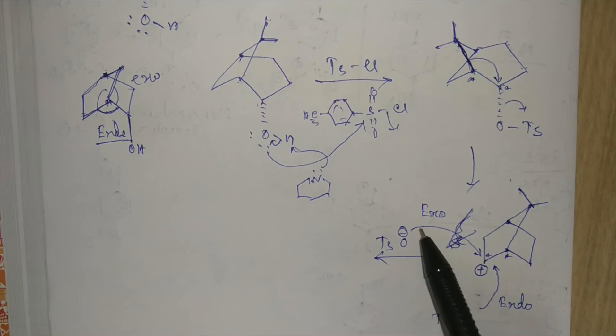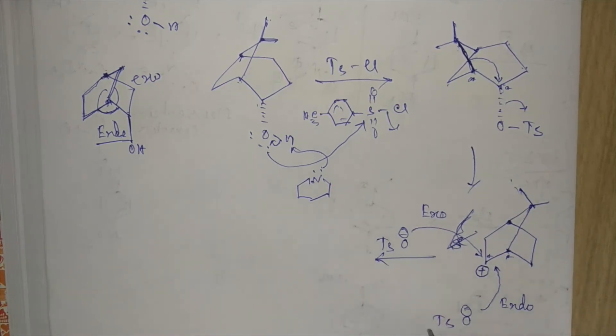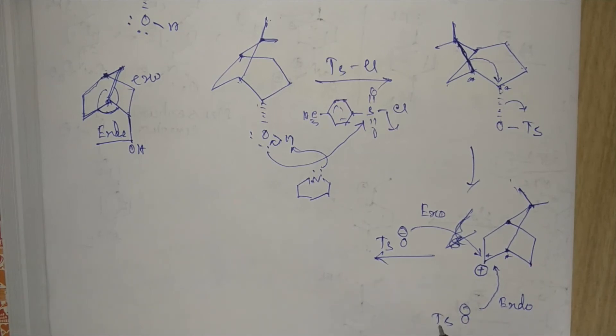So here, as the two methyl groups are in this bridged position, OTs group attacking in exo side will be prevented by this methyl group. So it will be easier to attack from below the plane, that is the endo side.